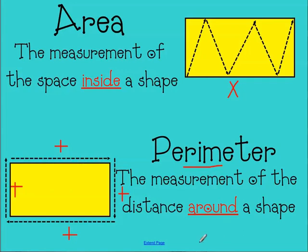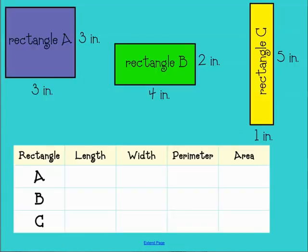Alright, so let's see if we can answer that question. Can rectangles have the same perimeter but different areas? To do that I have three rectangles here for you that we're going to compare. We have rectangle A, rectangle B, and rectangle C. So let's go ahead and fill in the information that we know in the chart and that will help us answer the question.